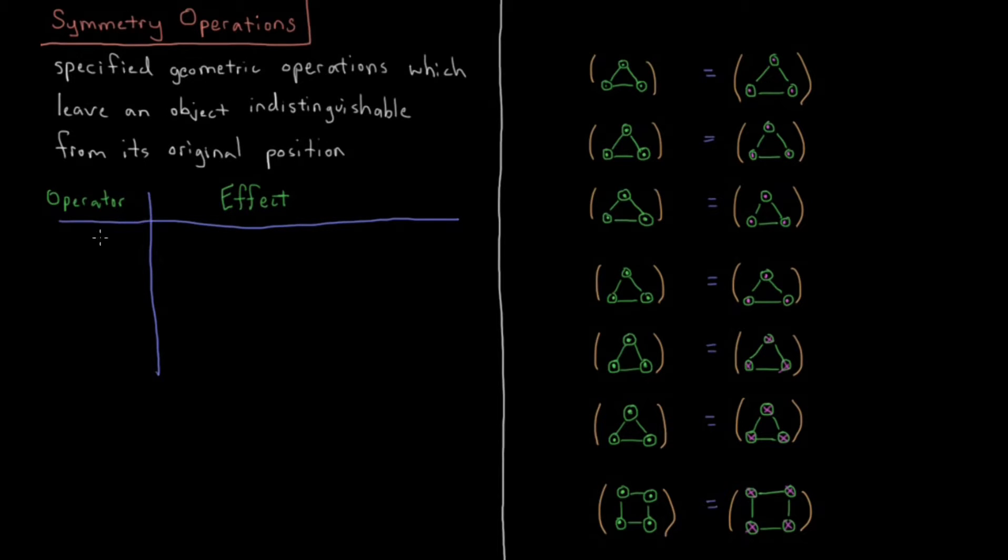The first operator is going to be labeled by capital E with a caret for the operator, and that is the identity operator. This is essentially like multiplying a function times one. It doesn't do anything, E acting on an object returns itself. That seems fairly trivial, not a whole lot of interesting stuff going on there.